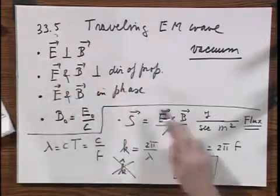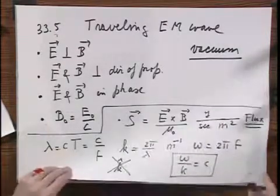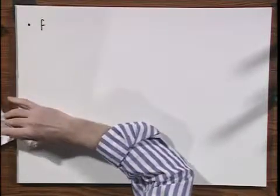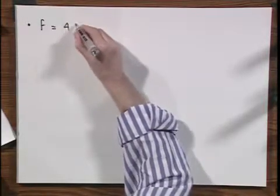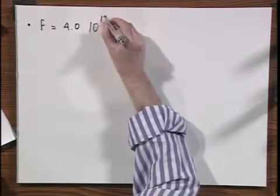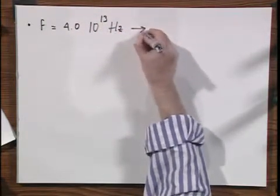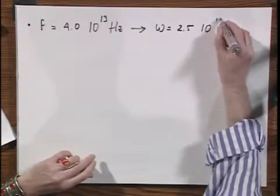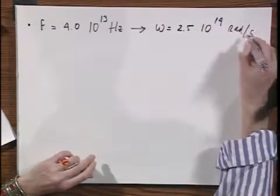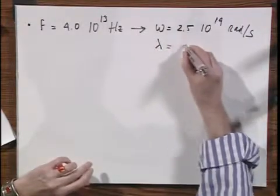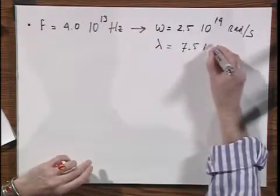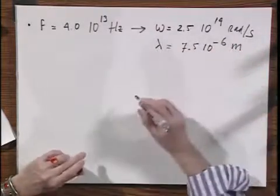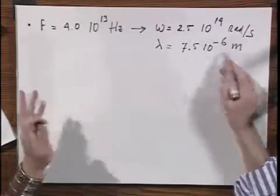Now if you can remember all these things, that would help. I happen to remember them. We have here in problem one, we have a frequency which is 4.0 times 10 to the 13 hertz. So it follows immediately that omega equals 2.5 times 10 to the 14th radians per second. And it follows that lambda equals 7.5 times 10 to the minus 6 meters, 75,000 angstroms if you like that unit. This is infrared radiation.